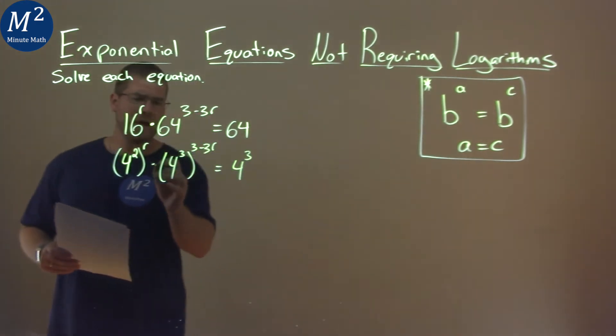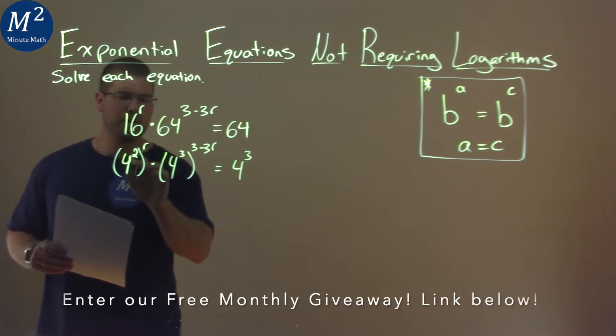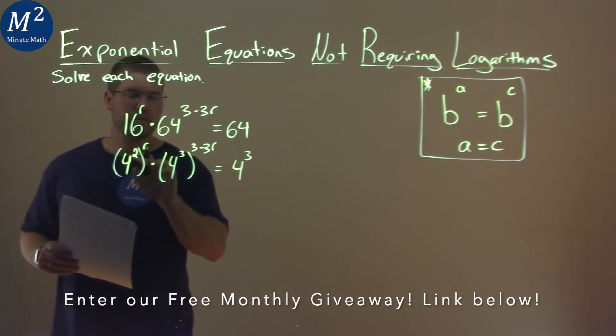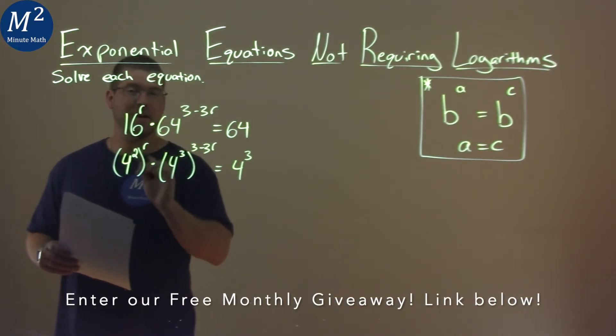Now, our rules: when we have the same base here, we have base to an exponent, and it's raised to another exponent, we multiply the exponents.